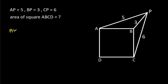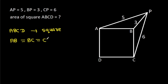ABCD is a square, which means AB will be equal to BC, equal to CD, equal to AD. Suppose AB is X, BC is X, CD is X, and AD is X.